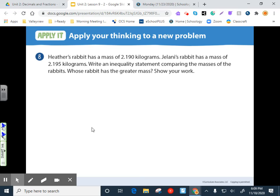Okay. Moving on to eight. I'll clear my ink. Heather's rabbit has a mass of two and nineteen hundredths kilograms. Jelani's rabbit has a mass of two and one hundred ninety five thousandths kilograms. Write an inequality statement comparing the masses of the rabbits whose rabbit has a greater mass. Show your work. Okay. So we did that last problem with mixed numbers and converting these to mixed numbers. Let's go back to our trusty friend, the place value chart.